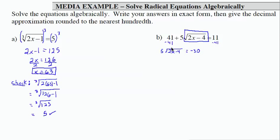Again, I want the radical part by itself. Now, so I'm going to divide both sides of the equation by 5, leaving me with square root of 2x minus 4 equals negative 6.